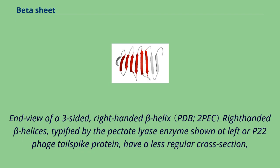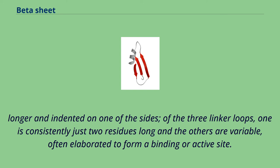End view of a three-sided right-handed beta helix. Right-handed beta helices, typified by the pectate lyase enzyme shown at left or P22 phage tailspike protein, have a less regular cross-section. Longer and indented on one of the sides, of the three linker loops, one is consistently just two residues long and the others are variable, often elaborated to form a binding or active site.